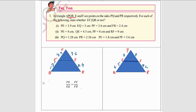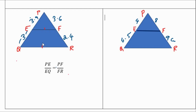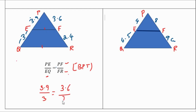In triangle PQR, E and F are points on PQ and PR respectively. For each case, state whether EF is parallel to QR or not. First case: PE = 3.9 cm, EQ = 3 cm, PF = 3.6 cm, FR = 2.4 cm. If two lines are parallel, the sides should be proportional, so we check PE/EQ = PF/FR. Here 3.9/3 is not equal to 3.6/2.4, so the ratios are not equal. Therefore EF is not parallel to QR.